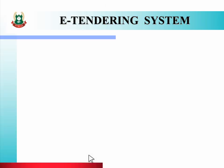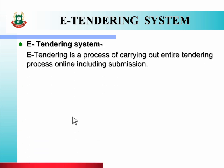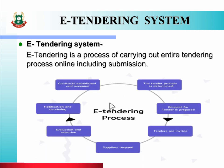Let us see about e-tendering. What is meant by the e-tendering system? E-tendering is a process of carrying out the entire tendering process online, including submission. Tendering की पूरी process को online करना और submission भी online लेना.